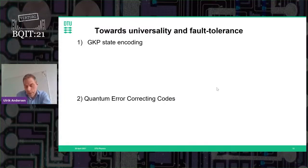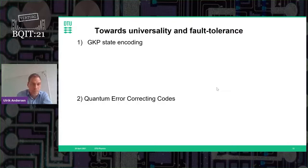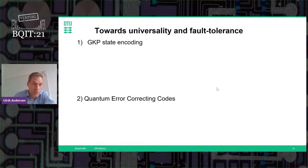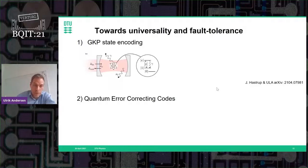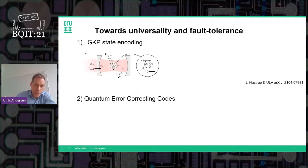We have now demonstrated universal Gaussian transformations in a continuous-variable cluster state, but there is still some way to go before it is universal and fault tolerant. One of the disadvantages of this approach is that it's quite difficult to produce the GKP state — which we need both as a qubit and as a resource in our non-Clifford gates and quantum error correction gates. Therefore we need to focus in the future on generating GKP states. There have been different proposals, and one strategy we came up with has just been put on the arXiv.